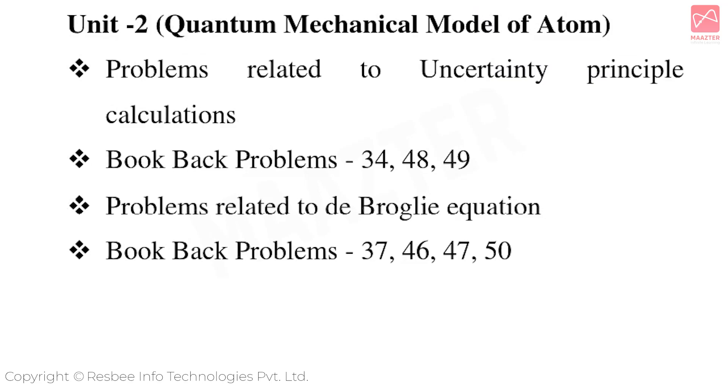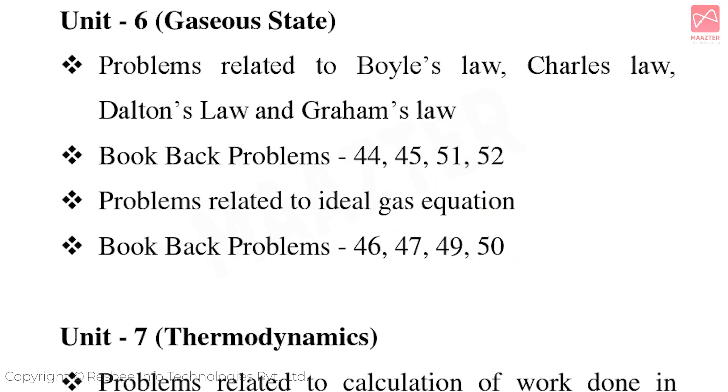Then Unit 2, Quantum Mechanical Model of Atom. Problems related to Uncertainty Principle and de Broglie equation are very important. The book back problems are 34, 48, 49, then 37, 46, 47, 50. These problems are very important.